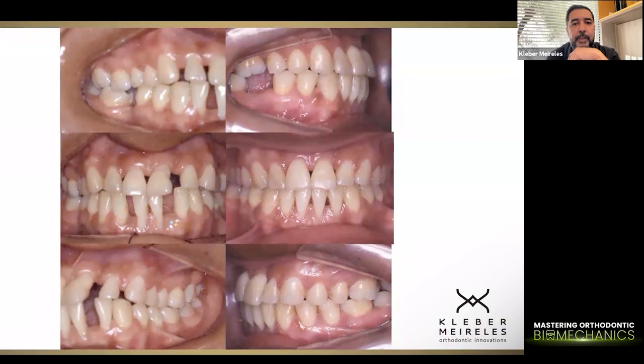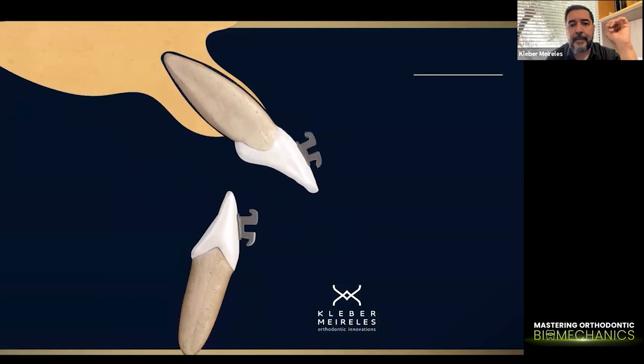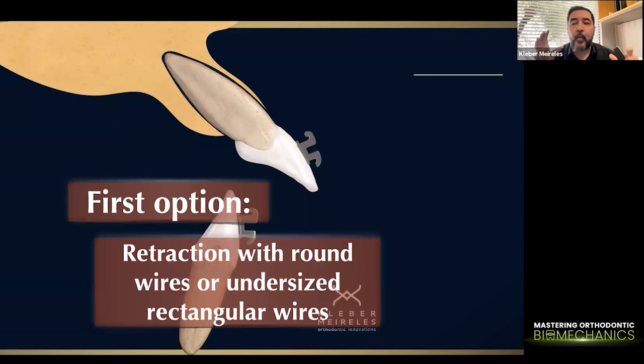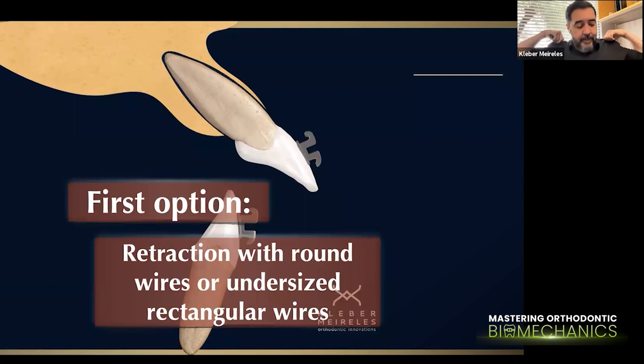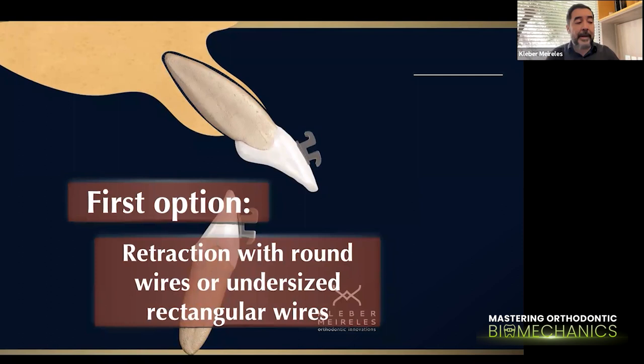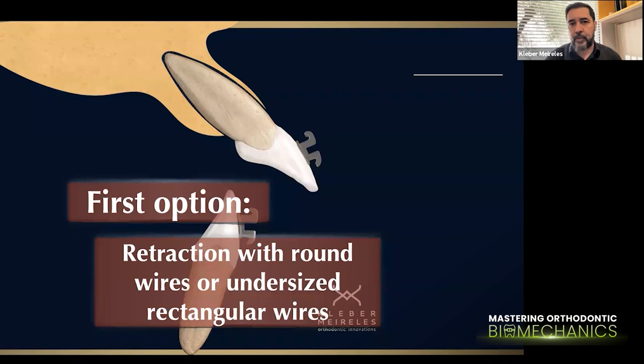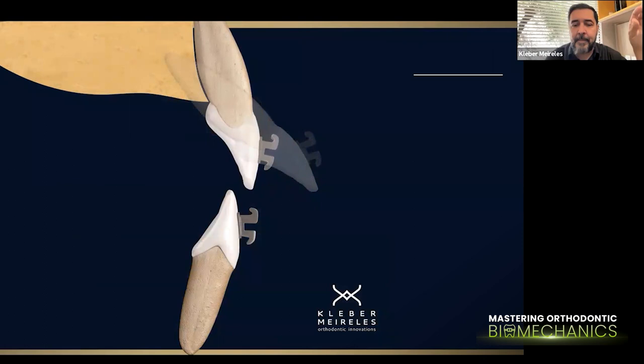Where do we want to place our center of rotation? As I told you, it's not completely accurate to say that doing retraction in a controlled way — what we call controlled tipping — will place the center of rotation at the apex. Why not? I'm going to explain that in more detail in an article I'm finishing now. But it may be simple for you to understand with these drawings.